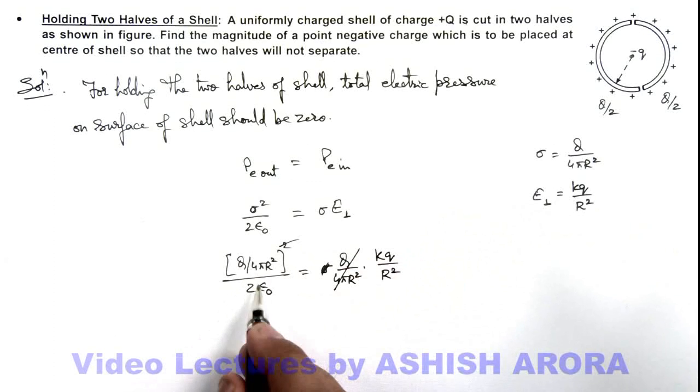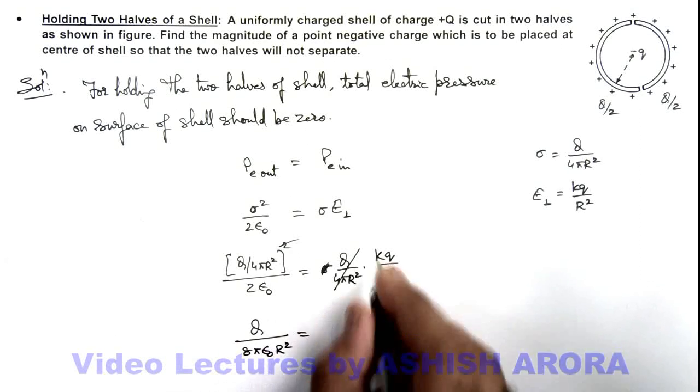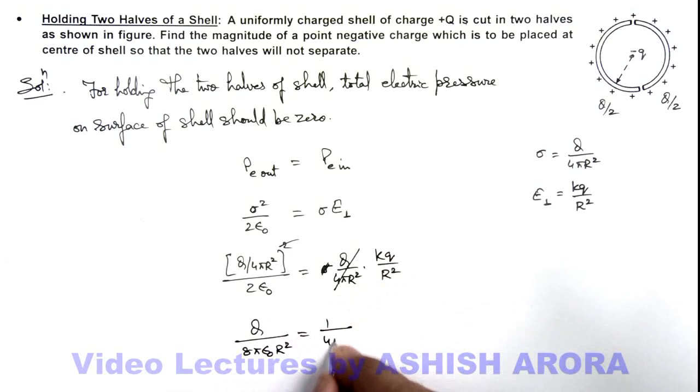And here the value we are getting is q by 8 pi epsilon not r squared is equal to here k we can write as 1 by 4 pi epsilon not multiplied by q by r squared. So here this pi epsilon not also gets cancelled out, this r squared also gets cancelled out, and this 4 will also get cancelled, so we are getting the charge q is equal to capital Q by 2 in magnitude. That is the answer to this problem.